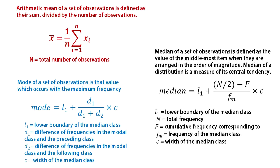This is the formula. You can say that median of a distribution is a measure of its central tendency. And finally, mode of a set of observations is that value which occurs with the maximum frequency. You can say that it is the most typical value of the set.